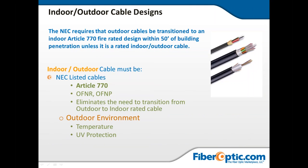Indoor-outdoor cable means the cable can be used outdoors and then run indoors for a certain distance depending on fire code — typically 50 feet. It can withstand UV, temperature, and weather outdoors, and then run inside as long as it reaches a junction box within 50 feet of the building, where you can then either break it out or splice in indoor cable. That's the benefit of indoor-outdoor cable designs.